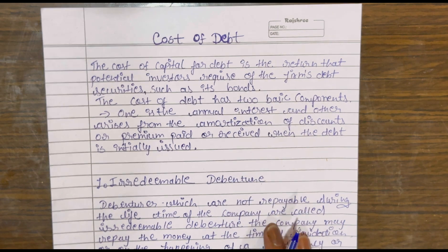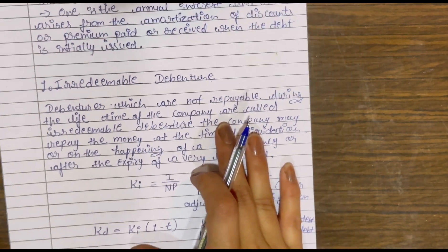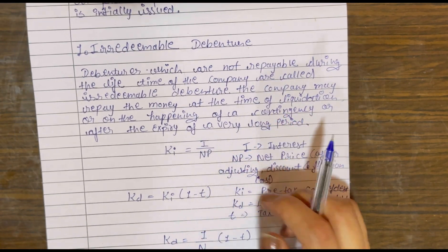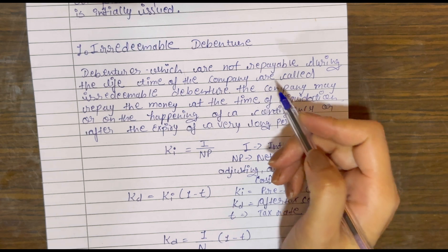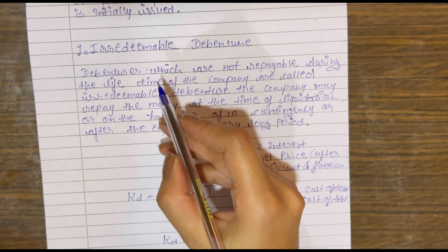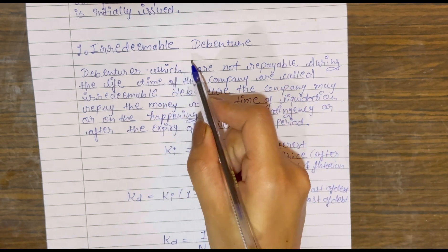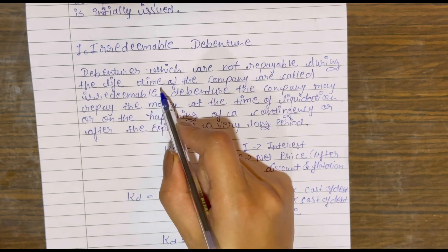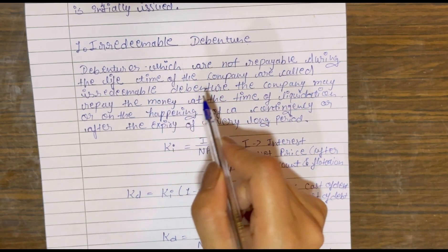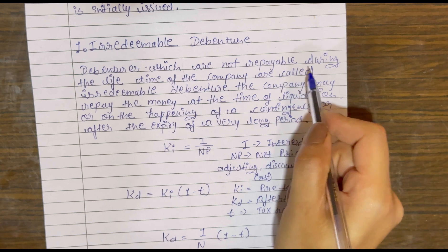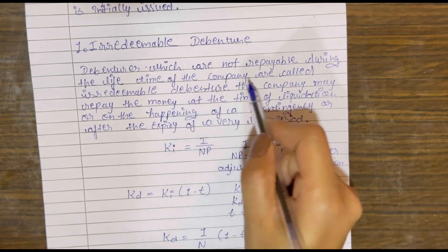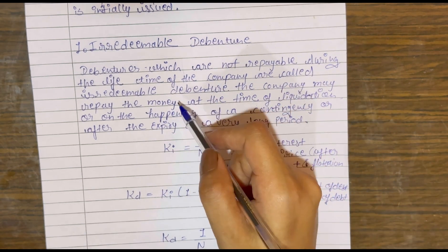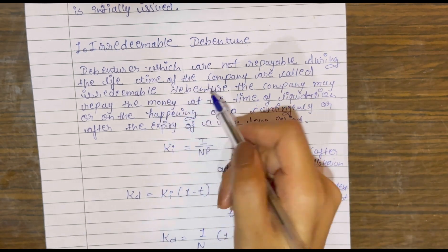Debentures are mainly of two types: Redeemable and Irredeemable. First, let's see Irredeemable debentures — those debentures which are not repaid during the lifetime of the company. They are irredeemable debentures.